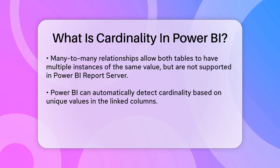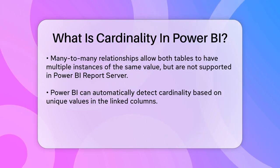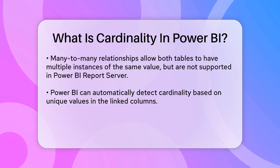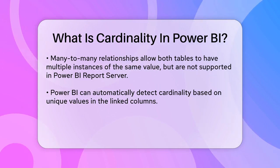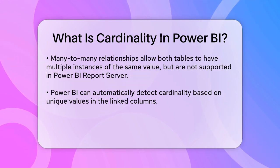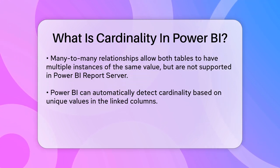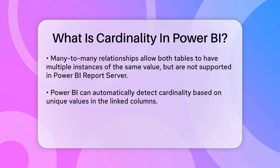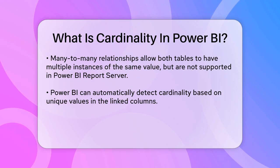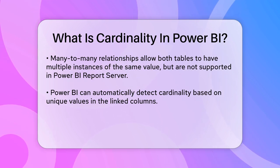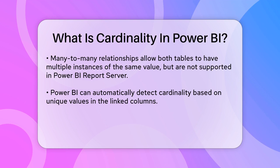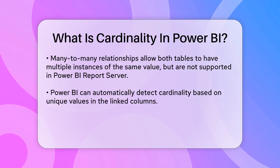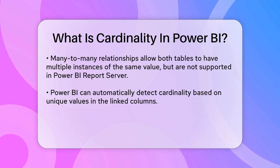When you set up a relationship in Power BI, the software can automatically detect the cardinality type based on the data. It checks for unique values in the columns you're linking and sets the cardinality accordingly. You can also manually adjust if you know your data will change in the future. For example, if you're linking a company project priority table to a project budget table, Power BI might initially set the cardinality to one-to-one. However, if you know that future updates will make the project names repeat, you should change the cardinality to many-to-one to reflect this.